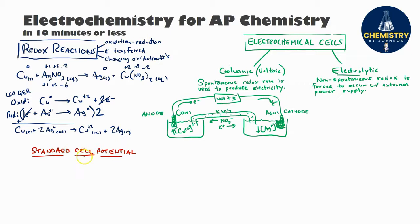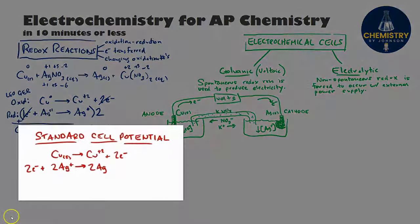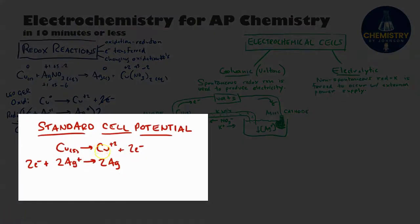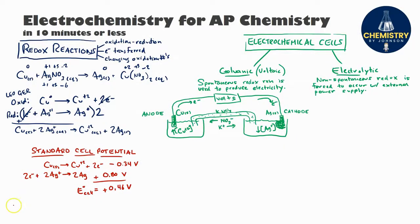You can calculate the voltage that your cell will produce by calculating something called the standard cell potential. To do that, you'd likely be given a reference called a standard reduction potential for each half reaction taking place in your electrochemical cell. I can look up that silver's reduction potential is 0.8 volts and copper's reduction potential for this half reaction is 0.34 volts. But notice that copper here is not a reduction—it's being oxidized. To represent the fact that the half reaction is flipped around, I change the reduction potential to negative. Now to get the standard cell potential, I just add those two values together. Here I get a positive 0.46 volts.